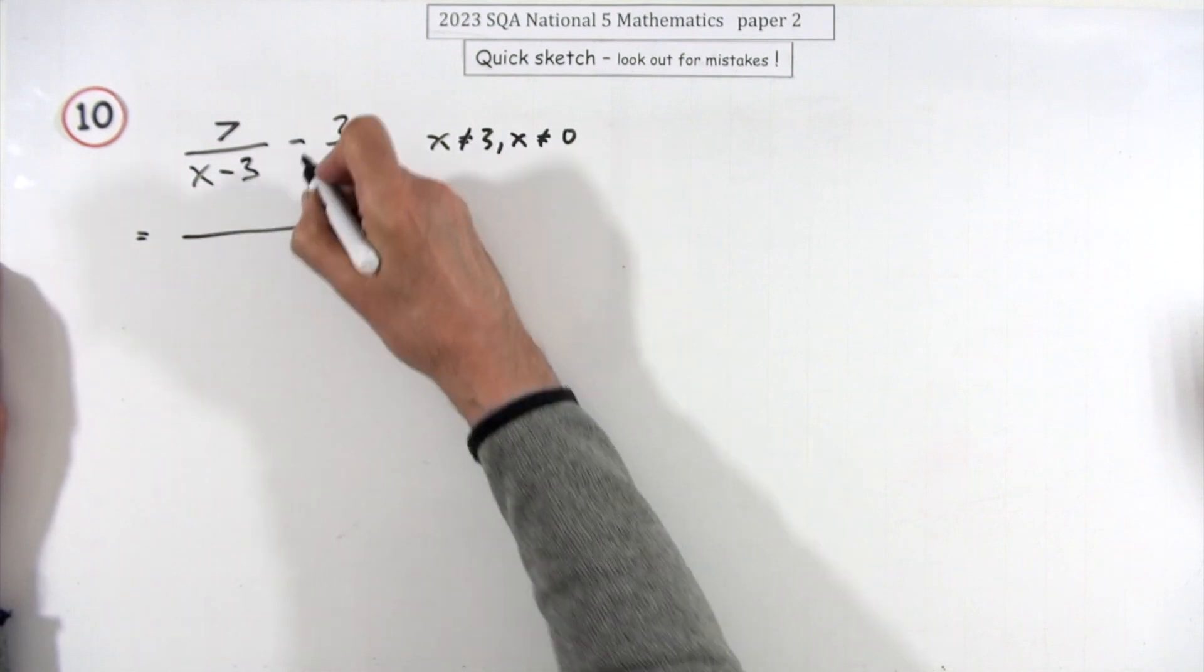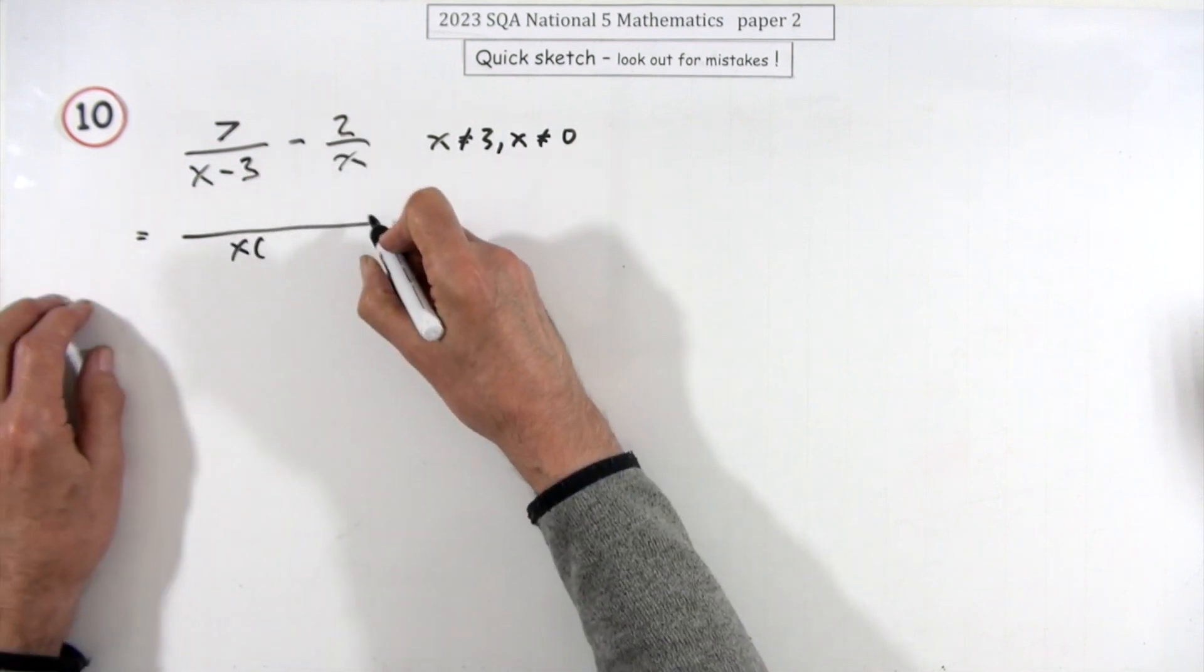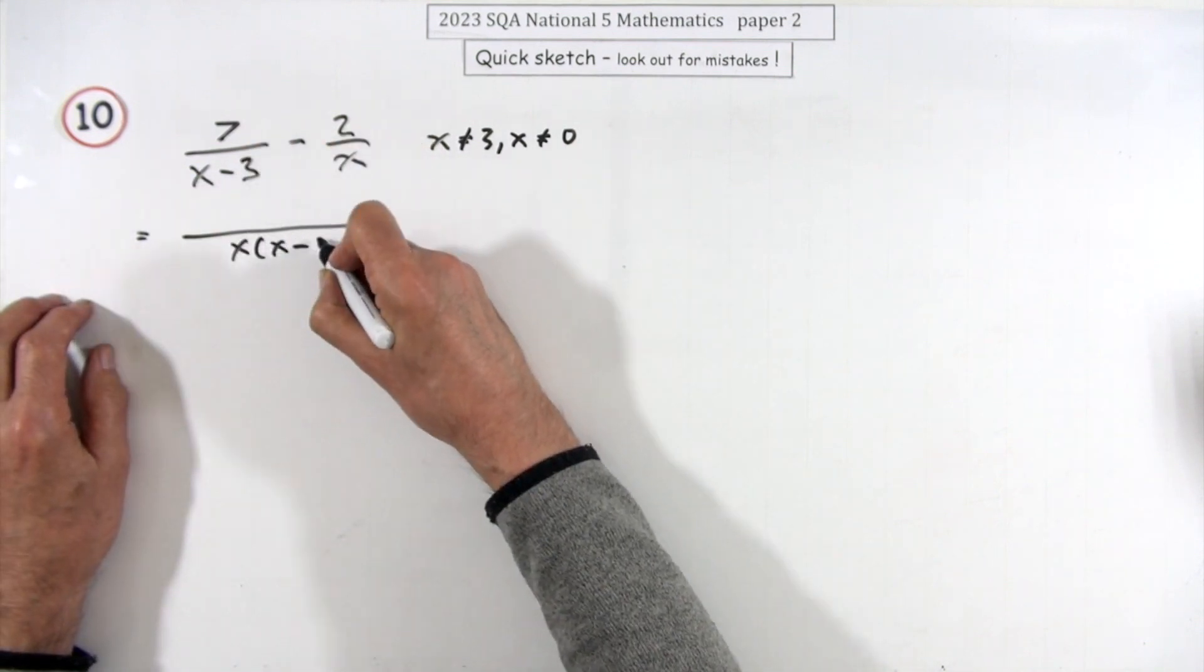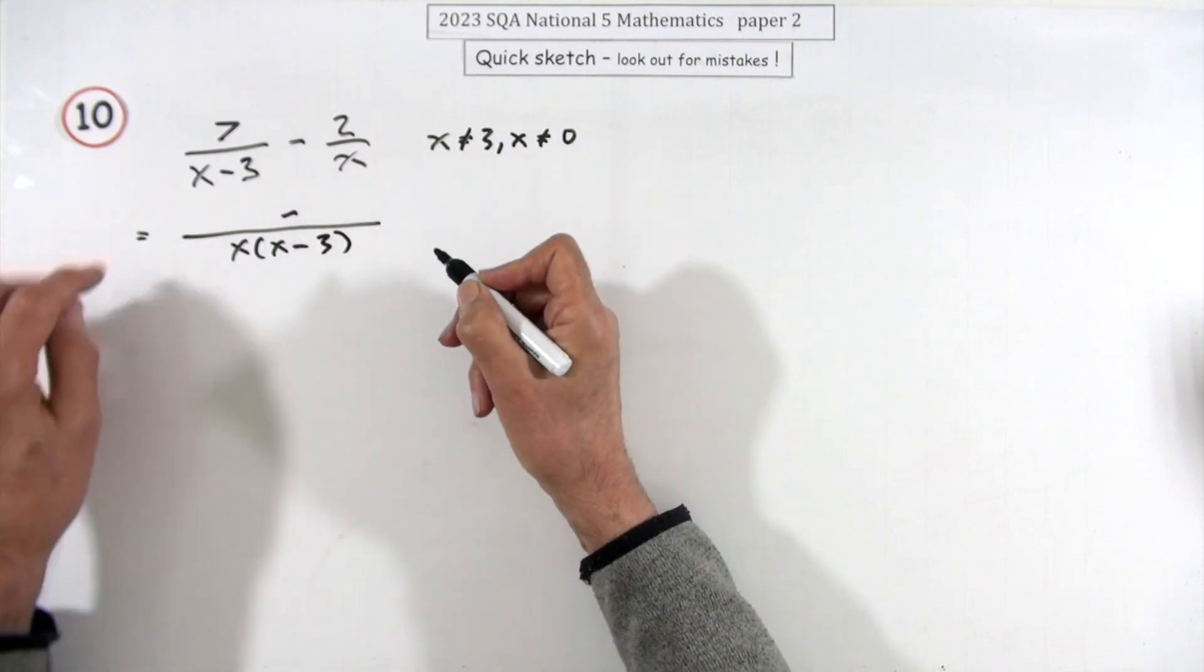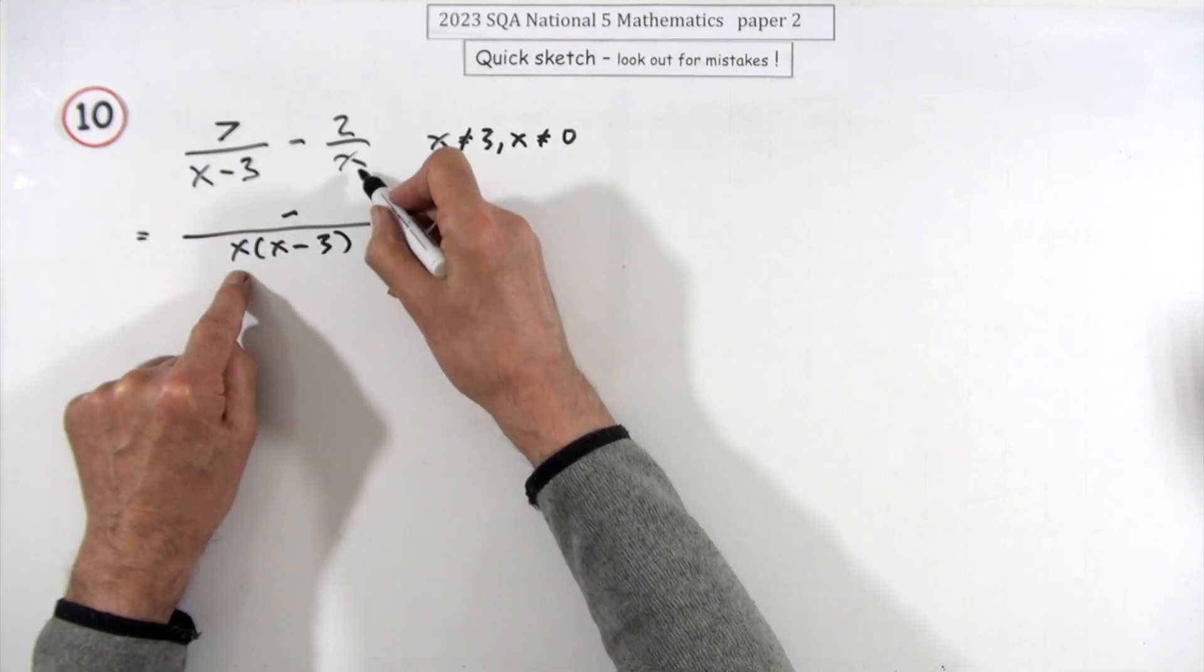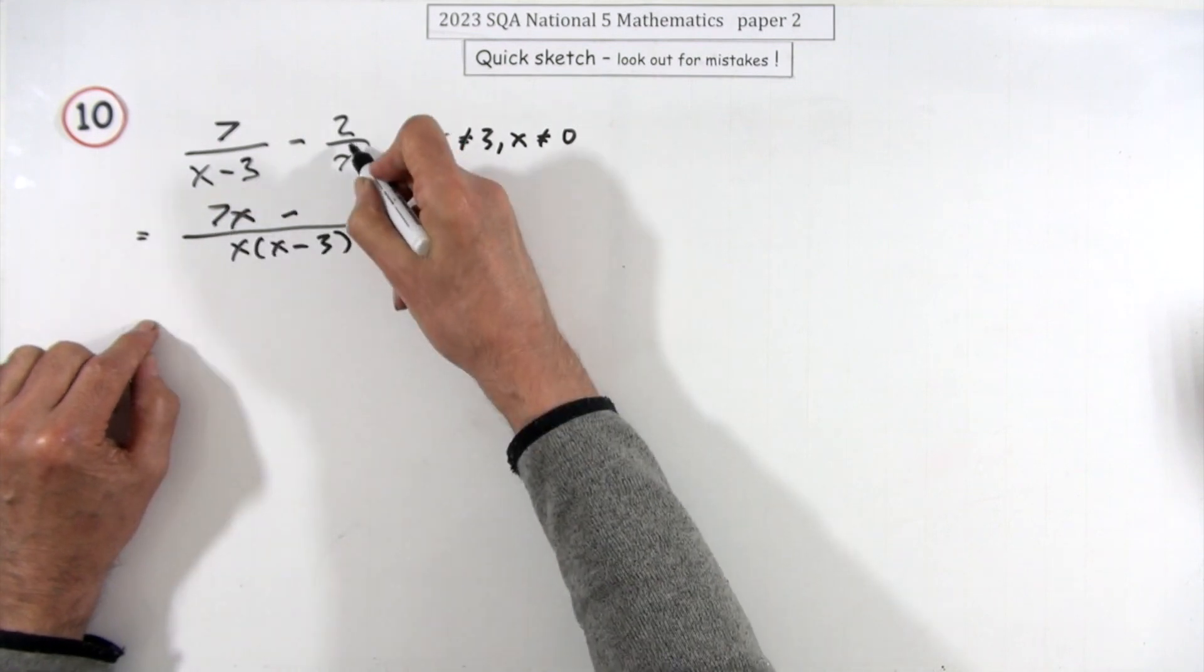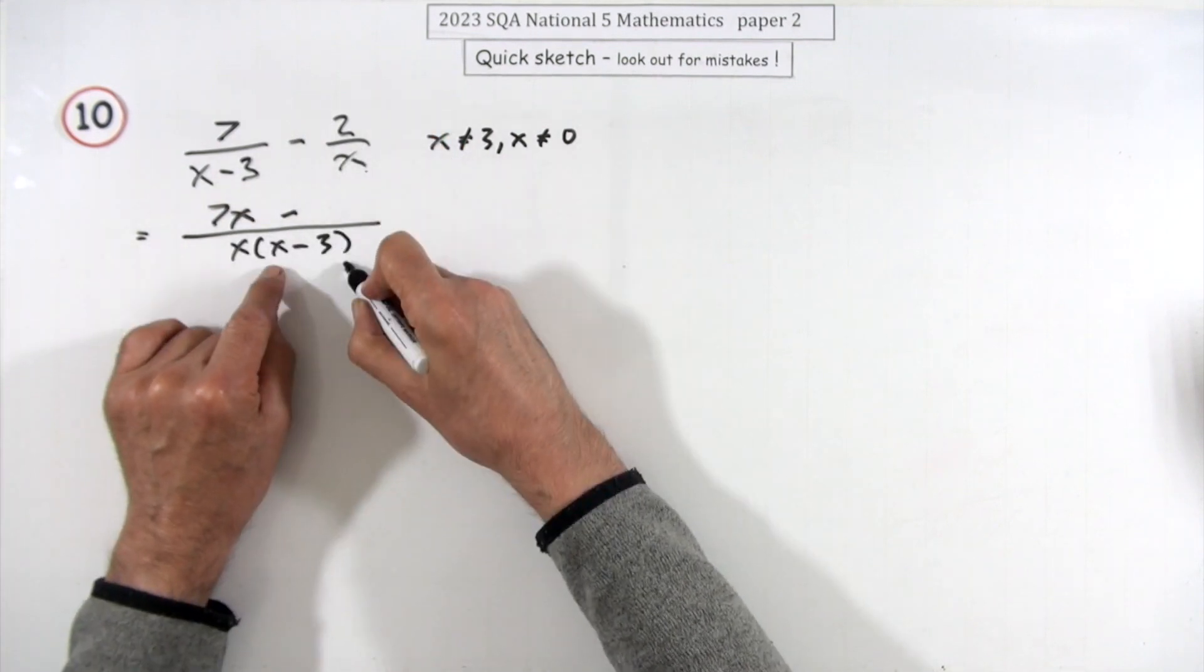You want a common denominator. That'll just be multiply the two you've got, x times x minus 3. That's already got this factor, so it'll need x multiplying it, making a 7x.